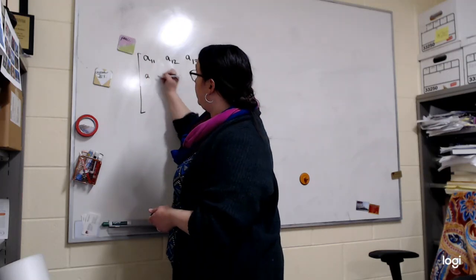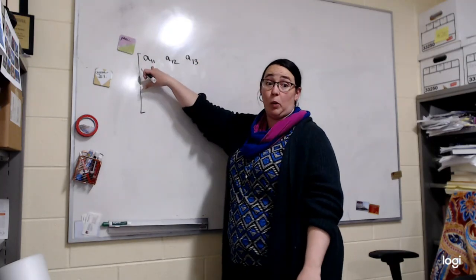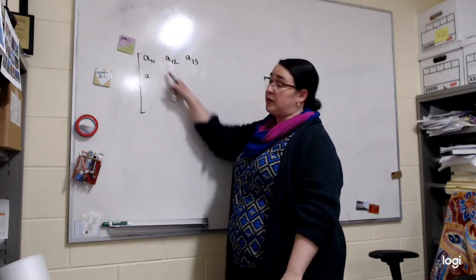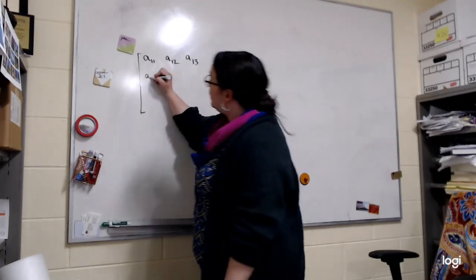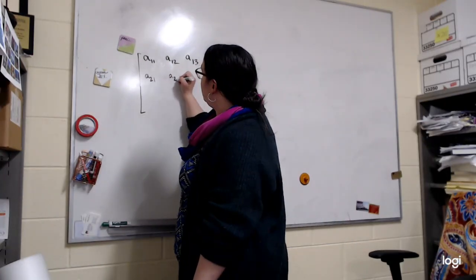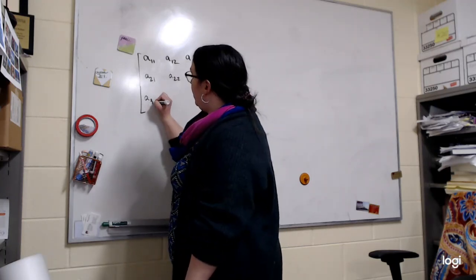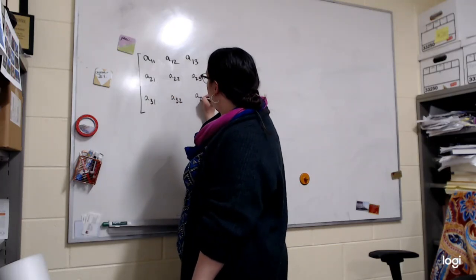A11, A12, A13, the first index is telling me what row I'm in, so we measure rows vertically, and then the columns are the second digit, so we've got 1, 2, and 3. So A21, A22, A23, and I'll use just a 3x3 matrix for this example. A31, A32, A33.